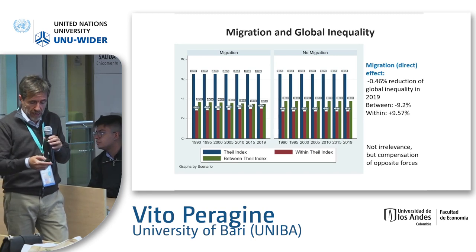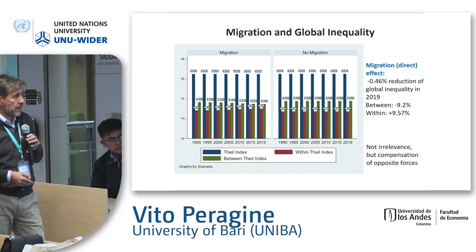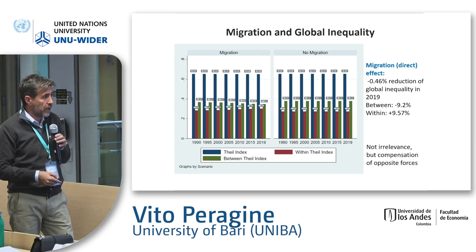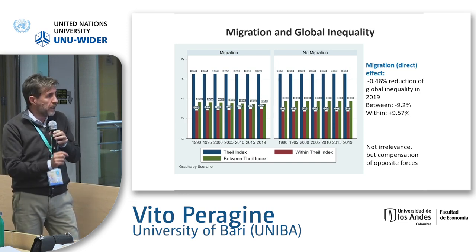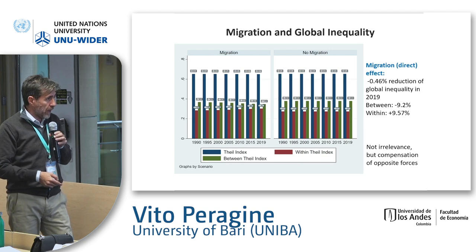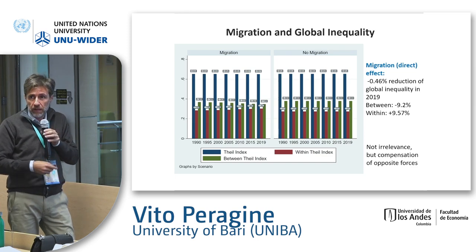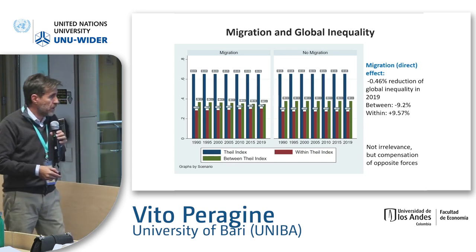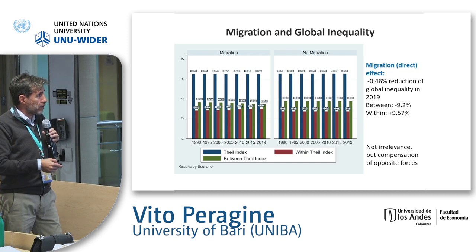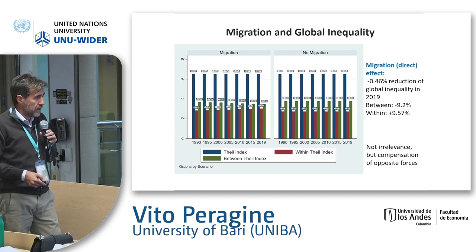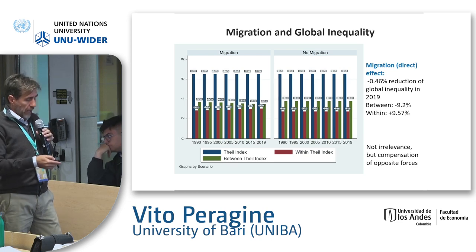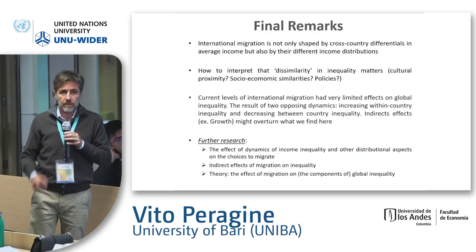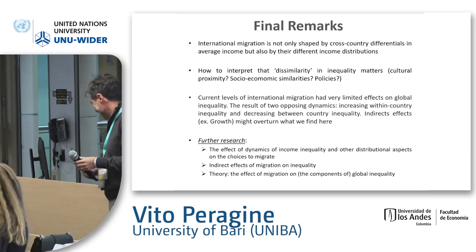We then compute inequality between and within countries. The results: migration has an effect on between-country income inequality of 9.2% — that is, a reduction in the Gini between countries. And it has an effect on the Gini within countries of almost the same size, but with the opposite sign. These two basically cancel out when summed. The point is that the effect of immigration on global inequality is not irrelevant, but is the compensation of opposite forces. Thank you.